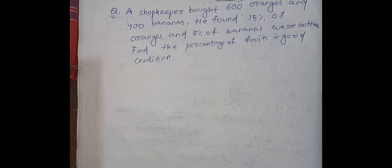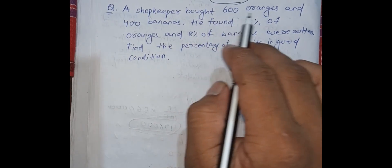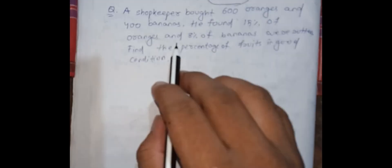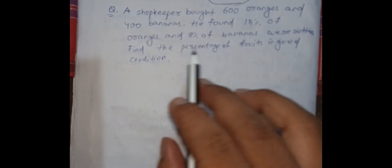Hello guys, welcome back to another video of AJ classes. Today's question is: a shopkeeper bought 600 oranges and 400 bananas. He found 15% of oranges and 8% of the bananas were rotten. Find the percentage of fruit in good condition.